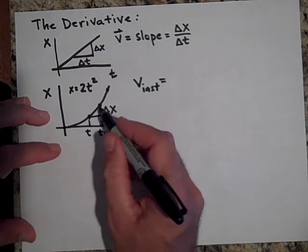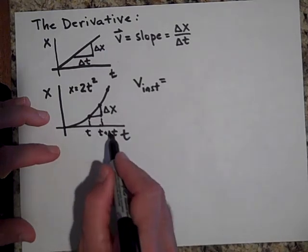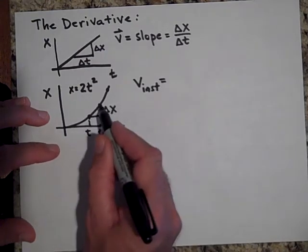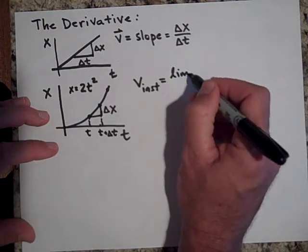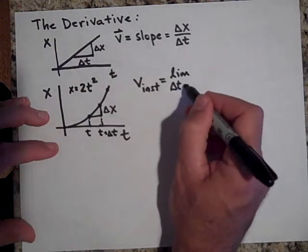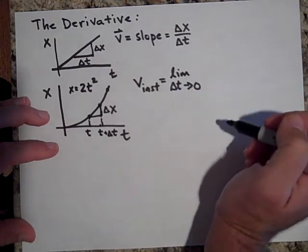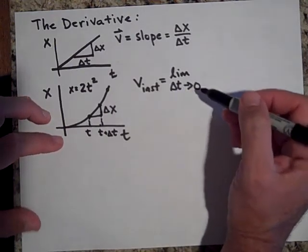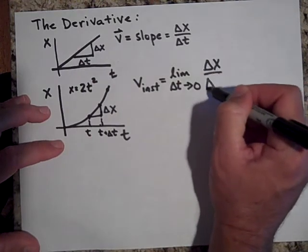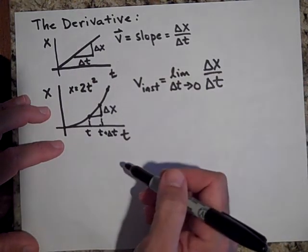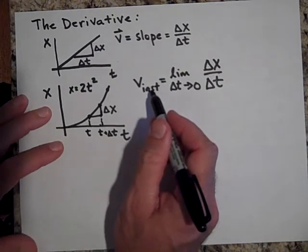If you let this, this delta t get real small. So you're going to get these points getting closer and closer. So the limit as delta t approaches zero of delta x over delta t. That's what the instantaneous velocity is.